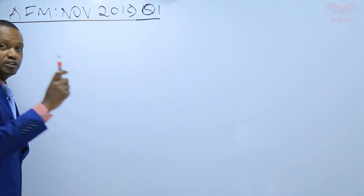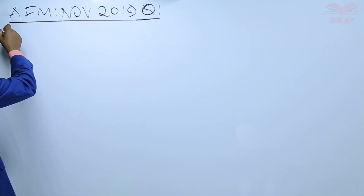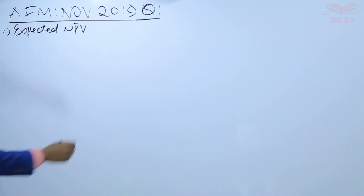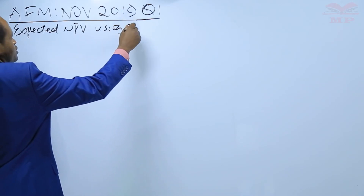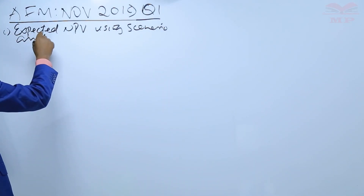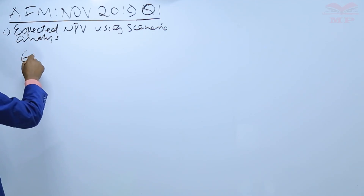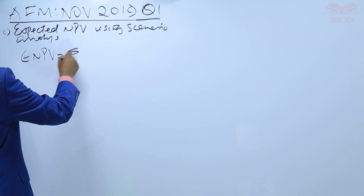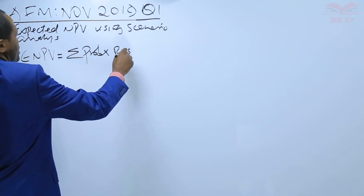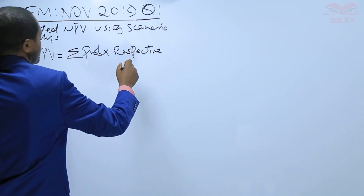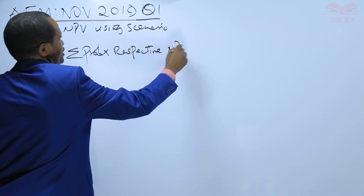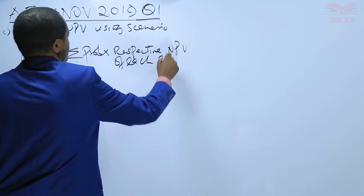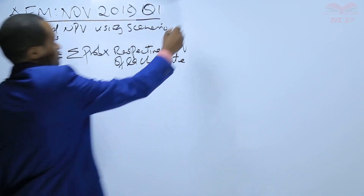Choosing scenario analysis, step number one: write down the formula. The expected NPV using scenario analysis is equal to the summation of the probabilities times the respective NPVs of each state. That's the formula.